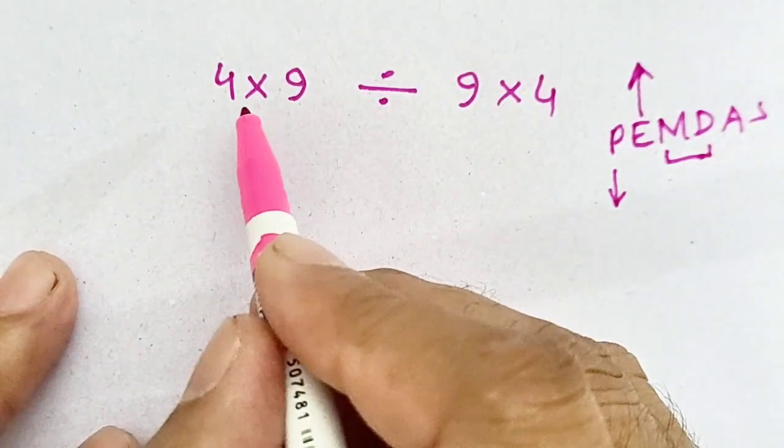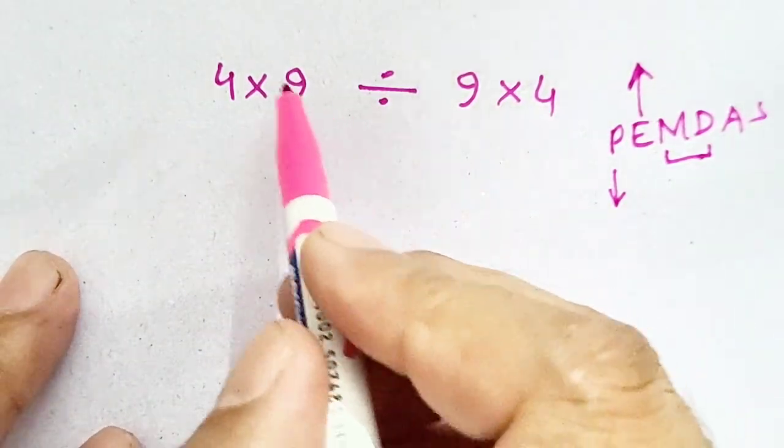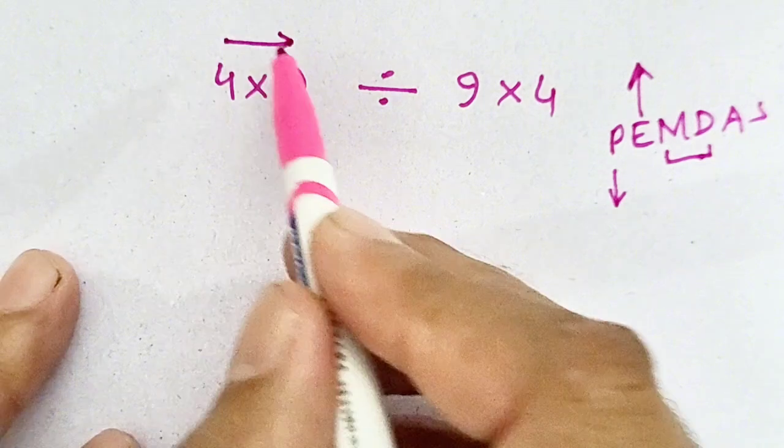Here, division and multiplication both are involved, so in this case when division and multiplication both are involved, we have to move from left to right.